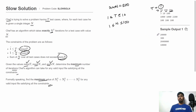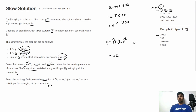For each test case we need to print the maximum number of iterations Chef's algorithm can take for any valid input file. In the first test case, T ranges from 1 to 10, N from 1 to 100, and total sum must not exceed 200. We can give N=100 twice, so the total run time is 100² + 100² = 10000 + 10000 = 20000. Output is 20000.